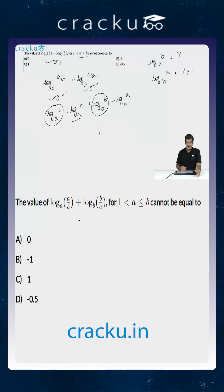Substituting these values, the given expression takes the form (1 - y) + (1 - 1/y), which simplifies to 2 minus (y + 1/y).